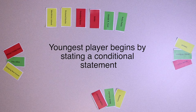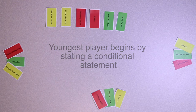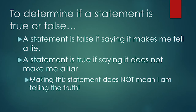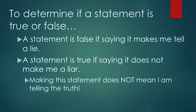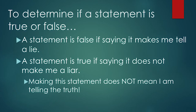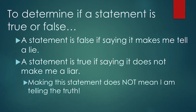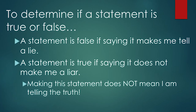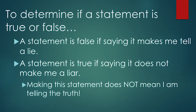The youngest player goes first and begins with a statement: 'If I am Robin Williams, then my favorite place is Detroit and my favorite state symbol is Apple Blossoms.' A good way to determine if a statement is true or false is the following: a statement is false if saying it makes me tell a lie, and a statement is true if saying it does not make me a liar.